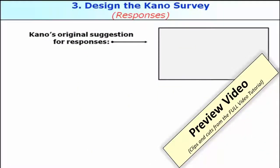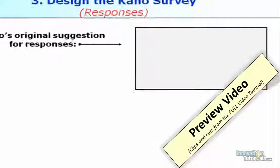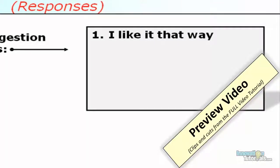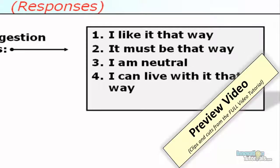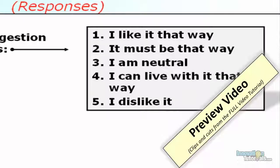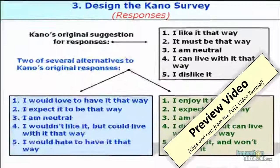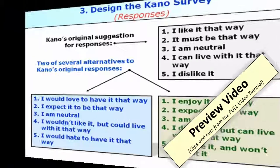Here are the classic responses for the two Kano questions developed by Professor Kano: 'I like it that way,' 'It must be that way,' 'I am neutral,' 'I can live with it that way,' and 'I dislike it.' Many Kano surveyors come up with alternative wording that still preserves Kano's goal but makes it easier for respondents to answer.